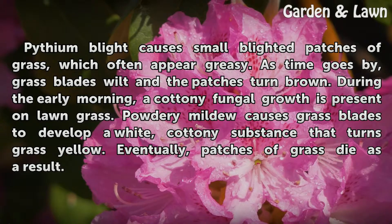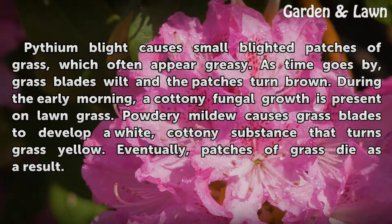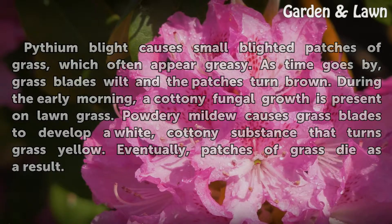Powdery mildew causes grass blades to develop a white, cottony substance that turns grass yellow. Eventually, patches of grass die as a result.